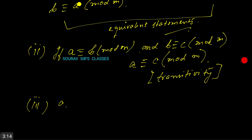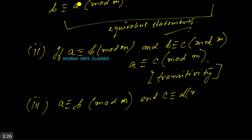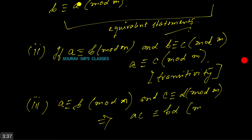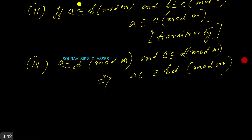If a ≡ b (mod m) and c ≡ d (mod m), then ac ≡ bd (mod m). This is the multiplicative property.